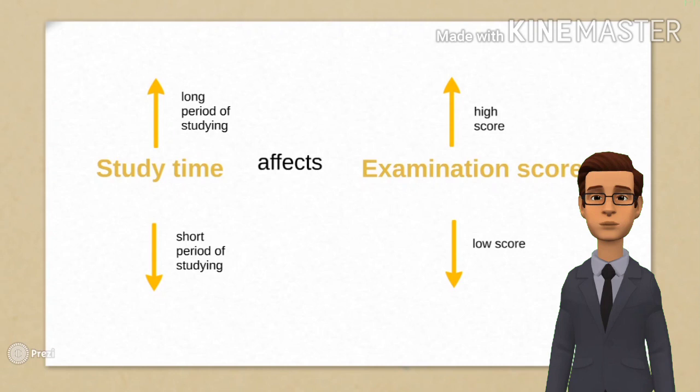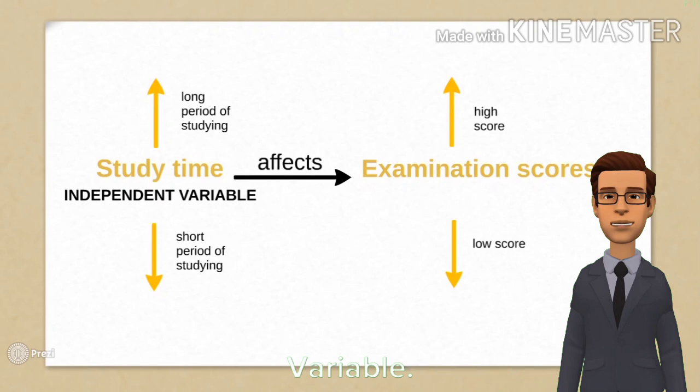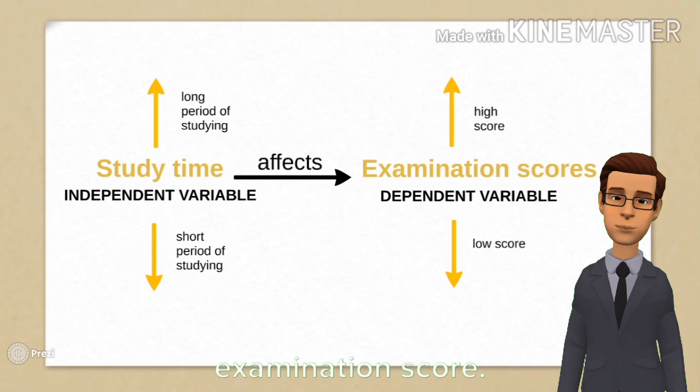Going back to IV and DV, study time is said to be the independent variable, and examination score is the dependent variable, because by definition, independent variable affects the dependent variable like in the case of study time and examination score.